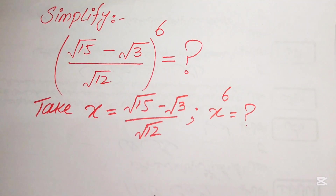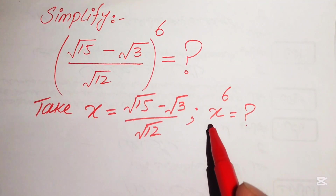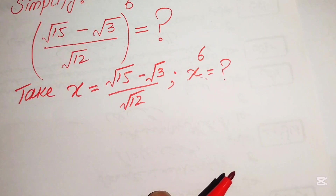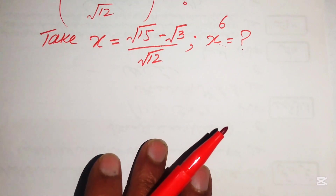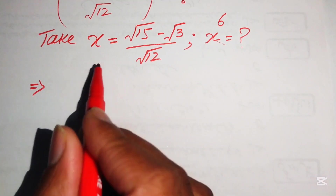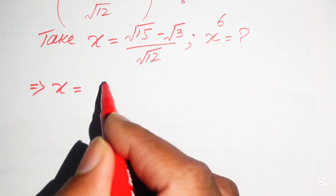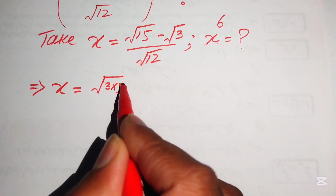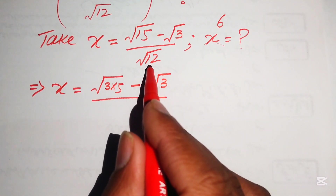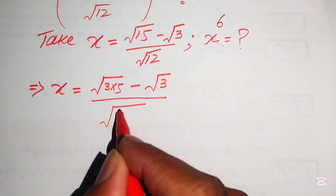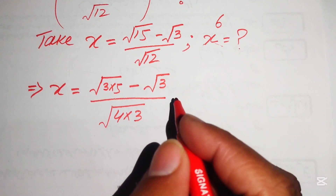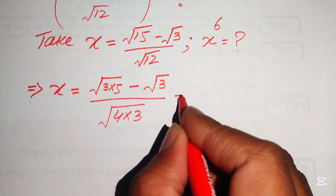Our next target is to find the value of x to the power of 6. First we need to simplify the terms. We have x equals square root of 15 minus square root of 3 over square root of 12. We write square root of 15 as square root of 3 times 5, and square root of 12 as square root of 4 times 3. Further, we apply the radical law: if inside a radical sign there is a product of two numbers, we separate the radical sign over both numbers.